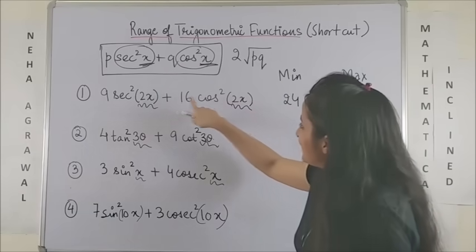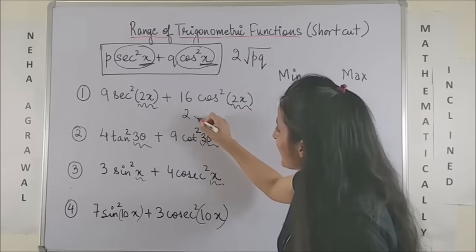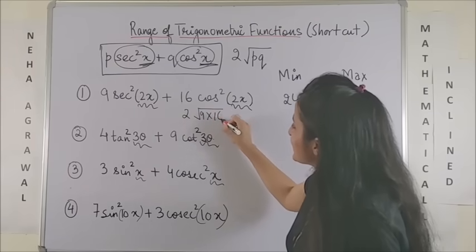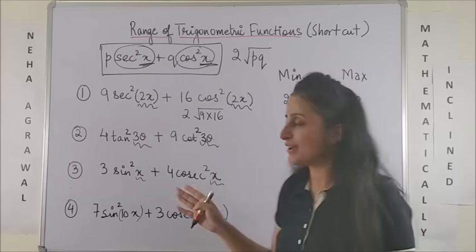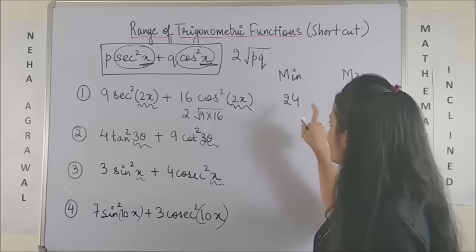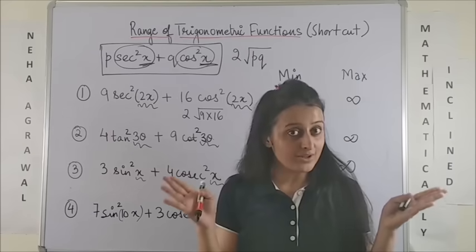So, as you can see, the answer to this one was twice of root 9 into 16. 9 into 16 is 144. So, 12 into 2, it was 24. Wasn't this easy?